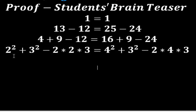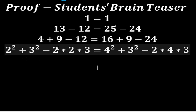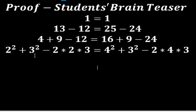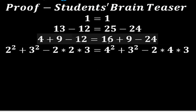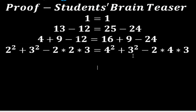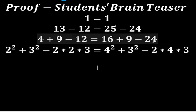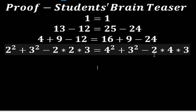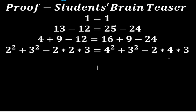Now I'm going to write 4 as 2 squared, 9 as 3 squared, and 12 as 2 times 2 times 3. And on the right side, 16 as 4 squared, 9 as 3 squared, and 24 as 2 times 4 times 3. This is all still true.